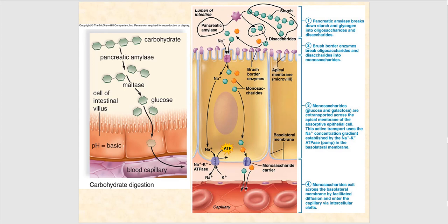Here are your brush border enzymes, which do the final clipping and hydrolyze maltose. Since we're using maltose as the example, that brush border enzyme is maltase. Maltase clips it, and now we have individual glucose molecules — individual monosaccharides. Before we talk about the movement of glucose, let's discuss where we have more concentration of these substances.